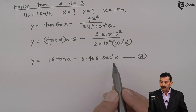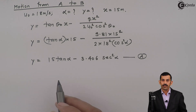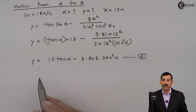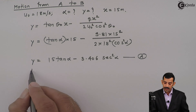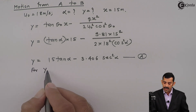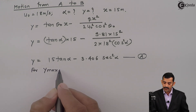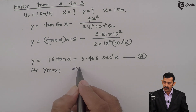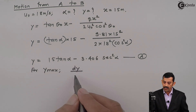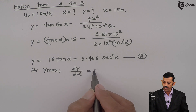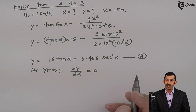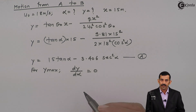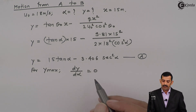Substituting different values of alpha gives different values of y. We are interested in y maximum. From the mathematics condition of maxima, for y to be maximum, differentiation of y with respect to alpha must equal zero. So we differentiate Equation A and set it equal to zero.